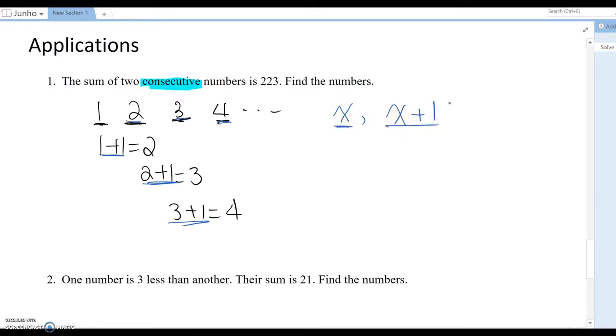Their sum becomes 223, so we can set up x plus x plus one equals 223.